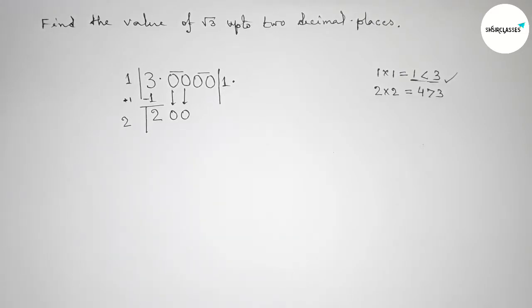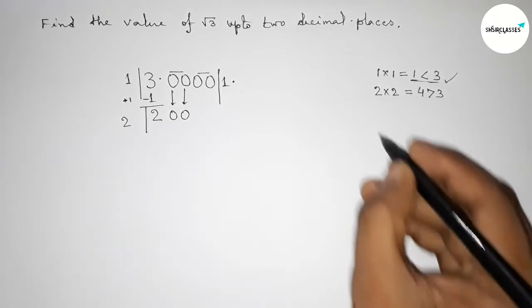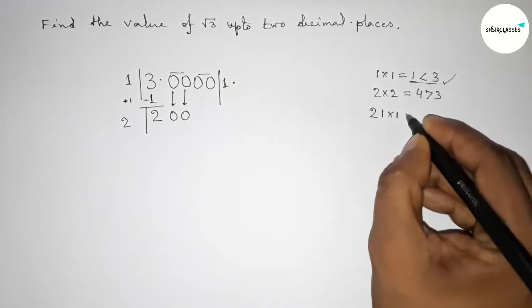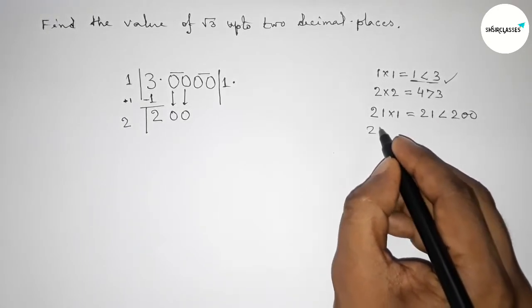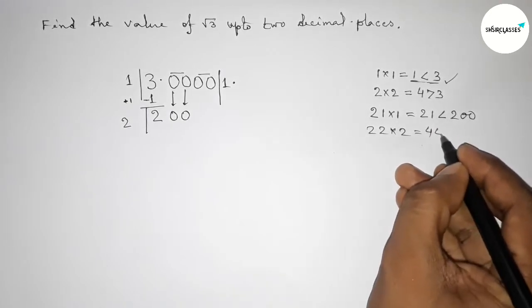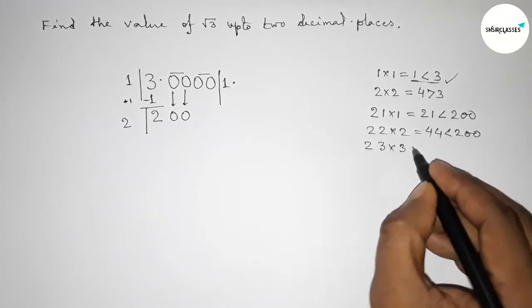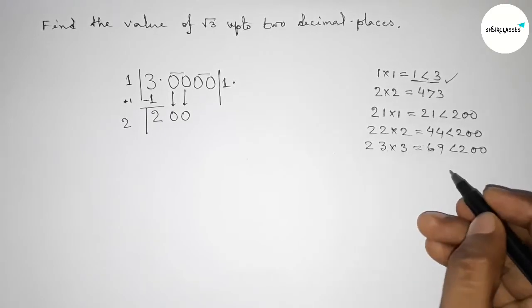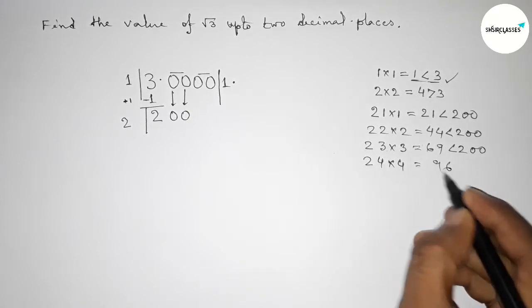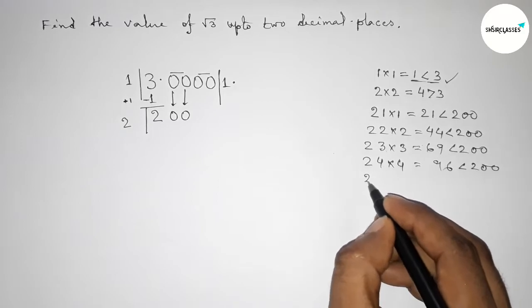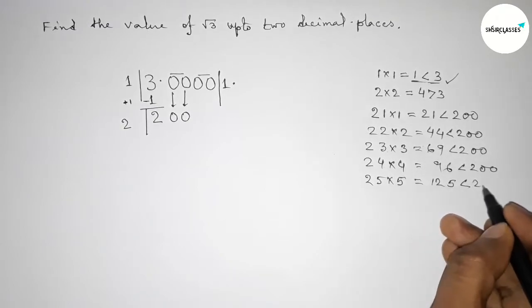Now take a number beside 2 and multiply by that number. If you put 1, then 21×1 = 21, which is less than 200. If you put 2, then 22×2 = 44, less than 200. Putting 3: 23×3 = 69, less than 200. Putting 4: 24×4 = 96, less than 200. Putting 5: 25×5 = 125, which is less than 200.